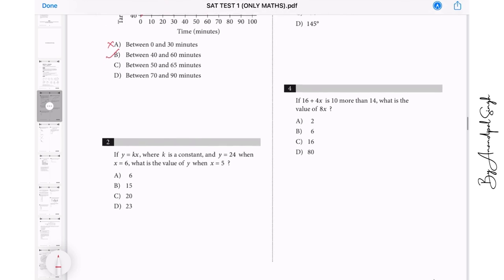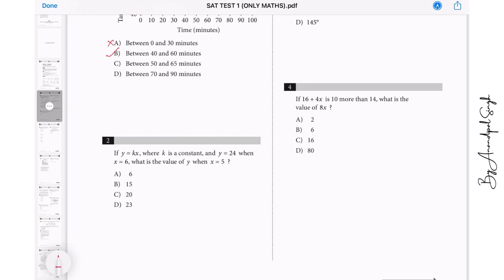Let us go to question number two. If y equals kx where k is a constant and y is equal to 24 when x equal to 6, it means that y is 24 and y is k times x is 6, so we get k equals to, dividing by 6 on both sides, therefore we have y is equal to 4 times x. So what is y when x is 5? Just plug in 5 over here, we get 4 times 5, yes it is 20. Option number C is correct.